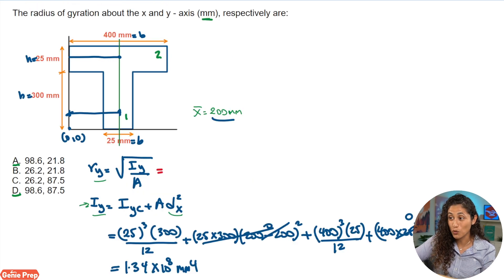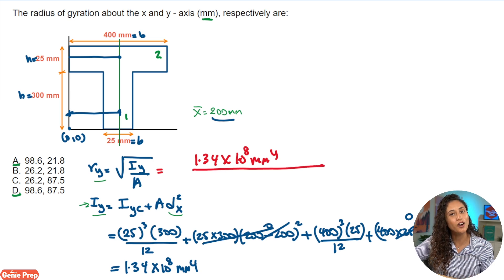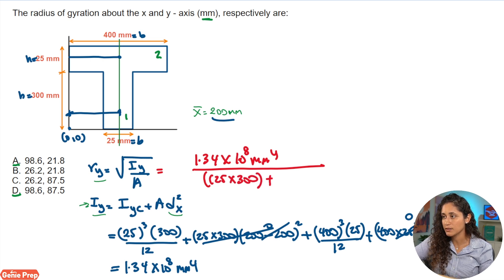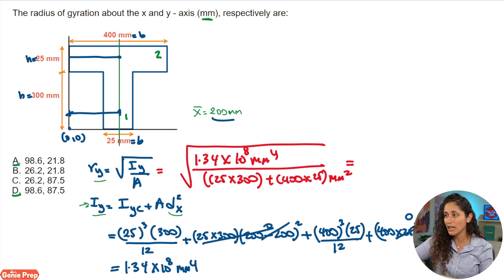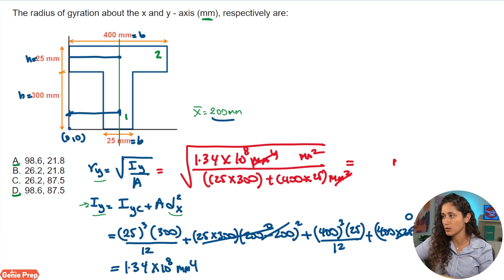Now solving for ry: we take the square root of 1.34 times 10⁸ divided by the total area (25 times 300 plus 400 times 25). The units cancel just as before, leaving millimeters, and plugging in the numbers gives us 87.5 mm. Looking at the multiple choice, the answer is D.